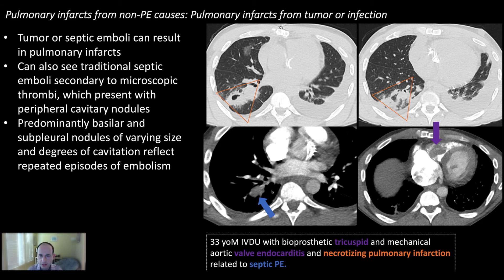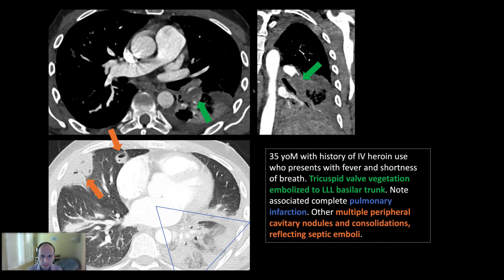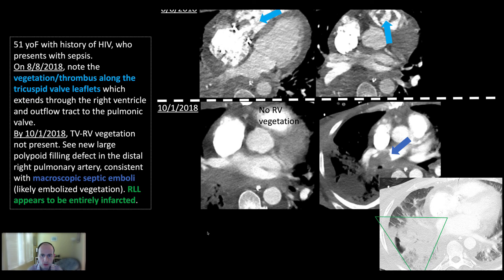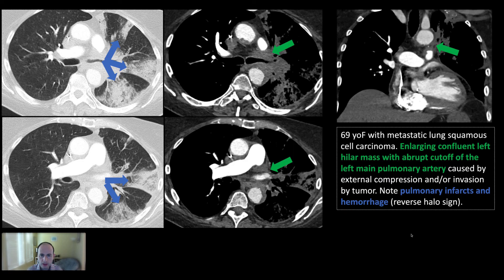Here is a case of pulmonary infarct caused by embolization of a septic embolus. You can see a large vegetation along the tricuspid valve, an embolus in the right lower lobe pulmonary artery with extensive surrounding inflammatory change. In another example, in the left lower lobe pulmonary artery with septic emboli, vegetation is seen along the tricuspid valve and main pulmonary artery, with subsequent embolization into the distal right pulmonary artery causing a large area of infarction.